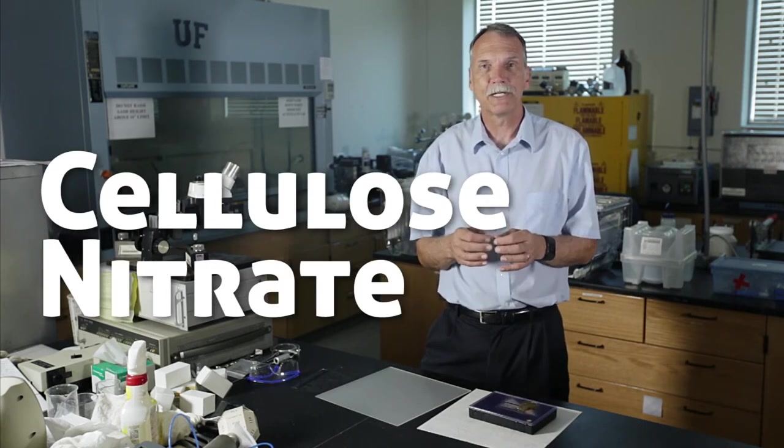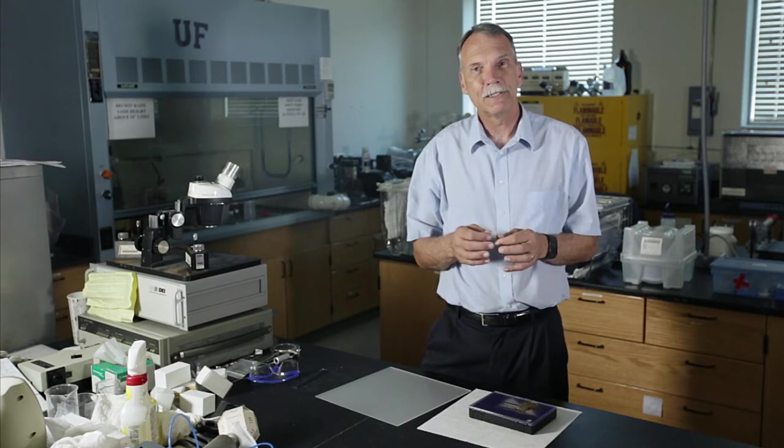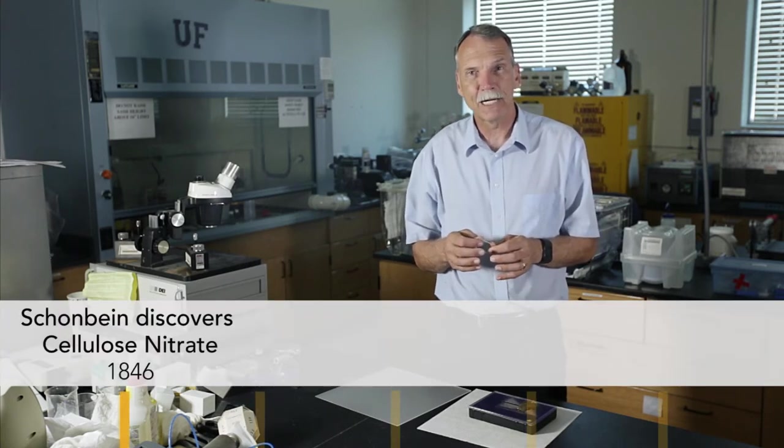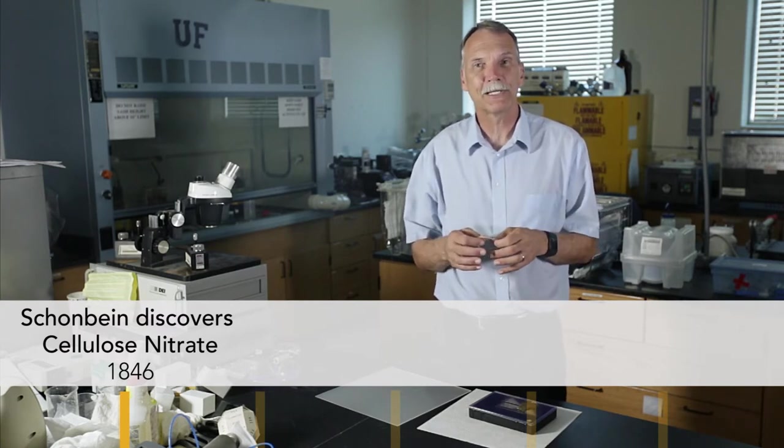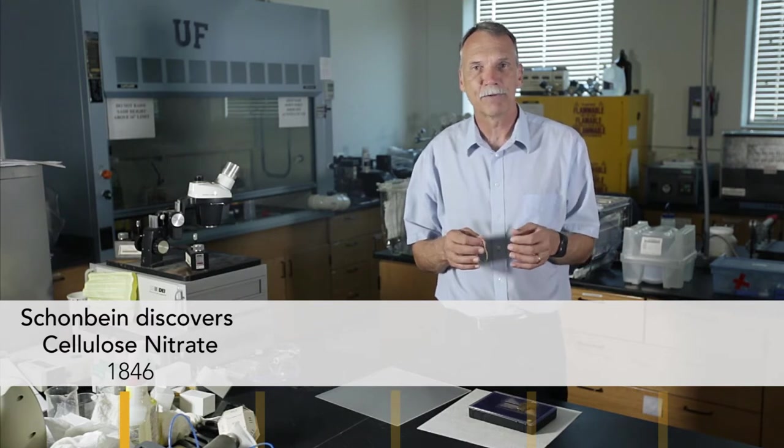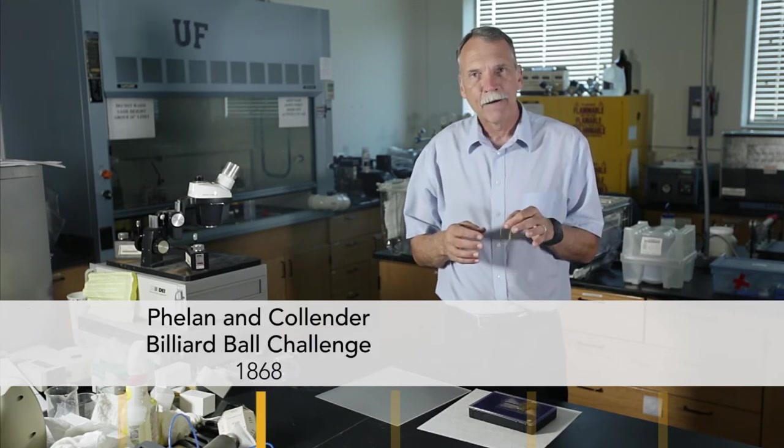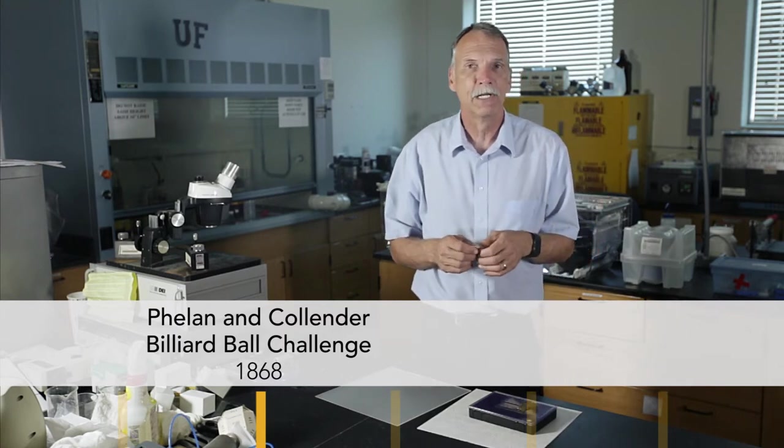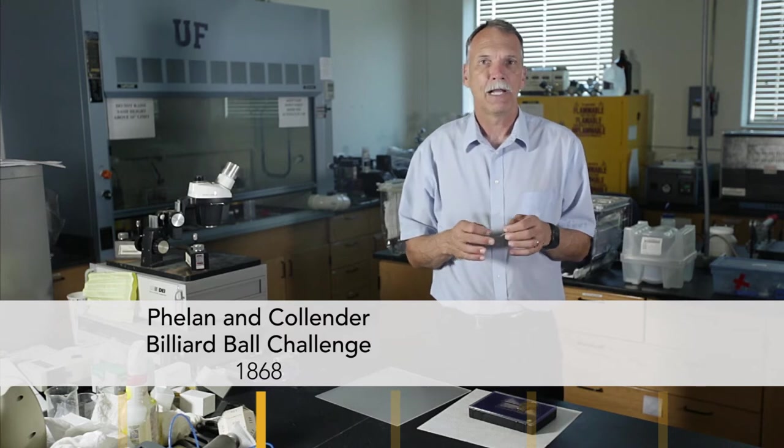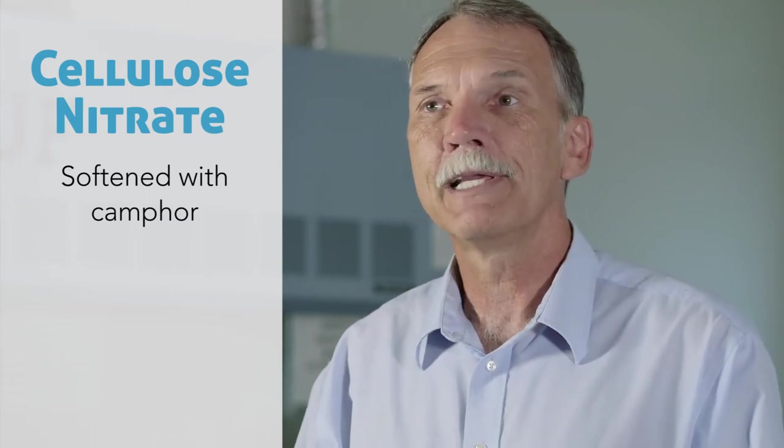The next polymer that we're interested in is a polymer called cellulose nitrate. This material was discovered by Schönbein at the University of Basel in 1846. What he did was he found that if he took paper and dissolved it in nitric and sulfuric acid, that he could extract a polymer from this. In 1868, Phelan and Collander launched a challenge—they offered a ten thousand dollar prize to anyone who could replace the billiard ball, which was at that time made of ivory, with a synthetic material.